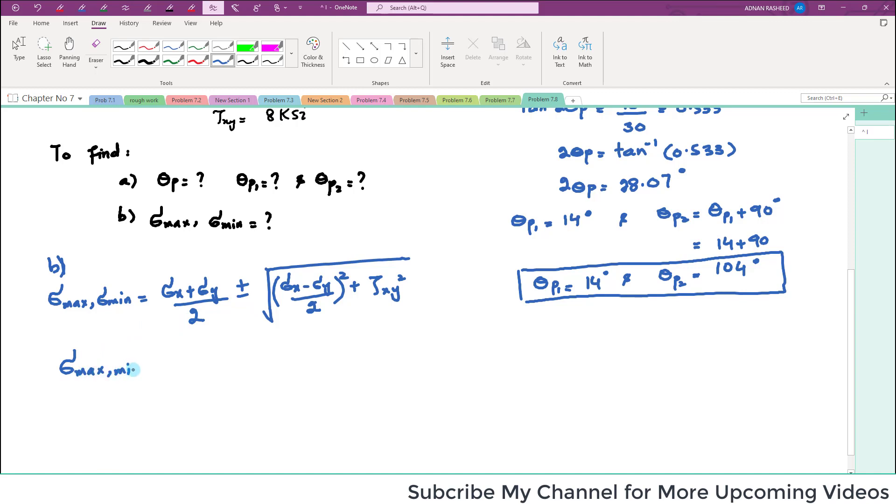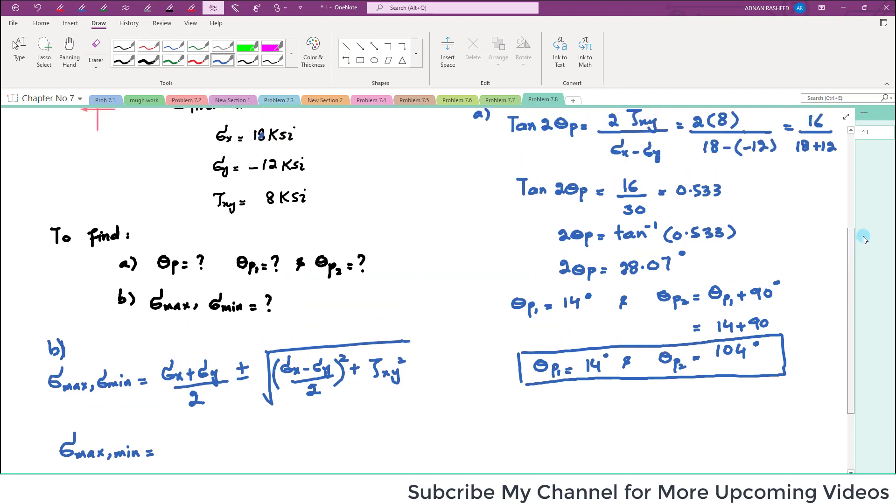The repetition is very good because you will be able to memorize it easily. So sigma_max and sigma_min equals: sigma_x is 18 plus minus 12 divided by 2, plus or minus [(18 minus minus 12)/2]^2 plus 8^2.